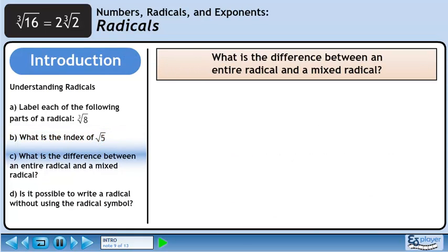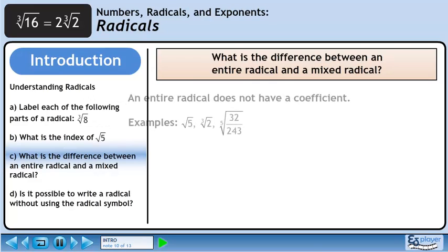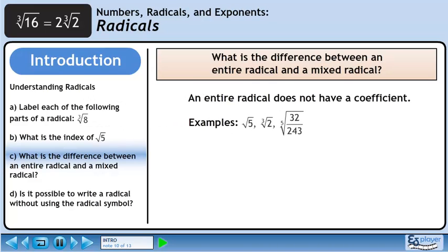Moving on to Part C, what is the difference between an entire radical and a mixed radical? An entire radical does not have a coefficient. The examples shown are all entire radicals because they lack a coefficient.